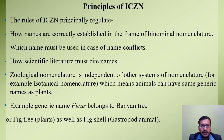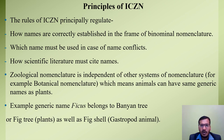Now this is the third and most important part: the Principles of ICZN. The rules of ICZN principally regulate how names are correctly established in the frame of binominal nomenclature. The principles also regulate which name must be used in case of name conflicts — for example, if the same species is provided with two different names, or two different species are provided with the same geological name.